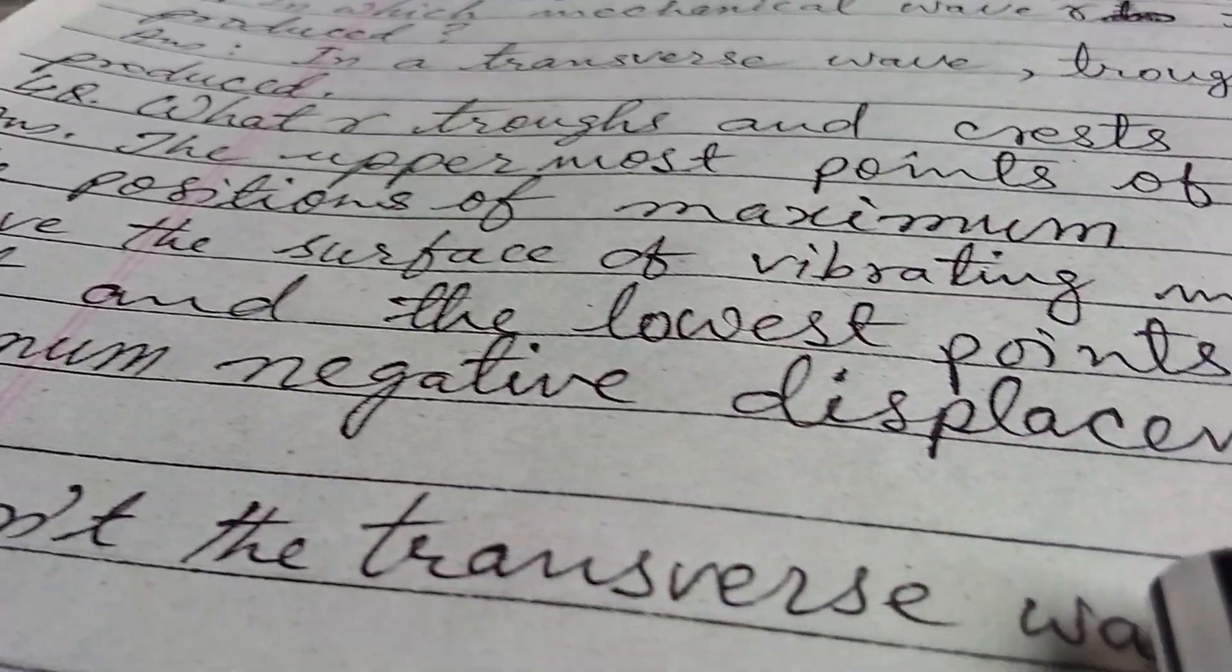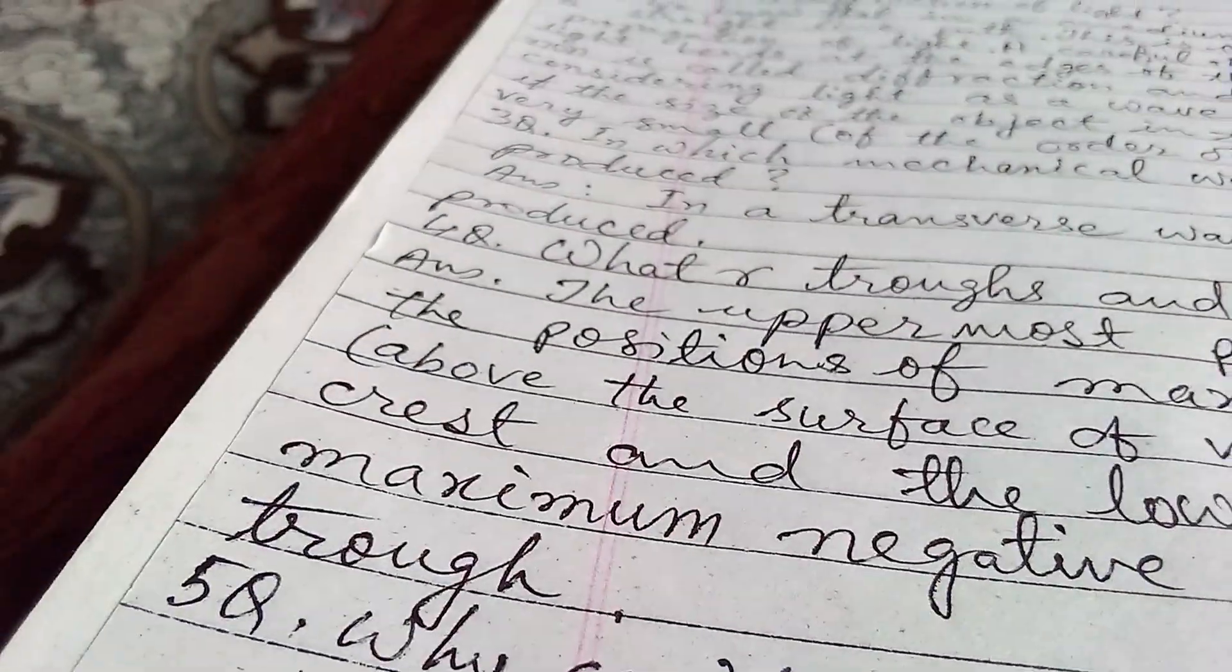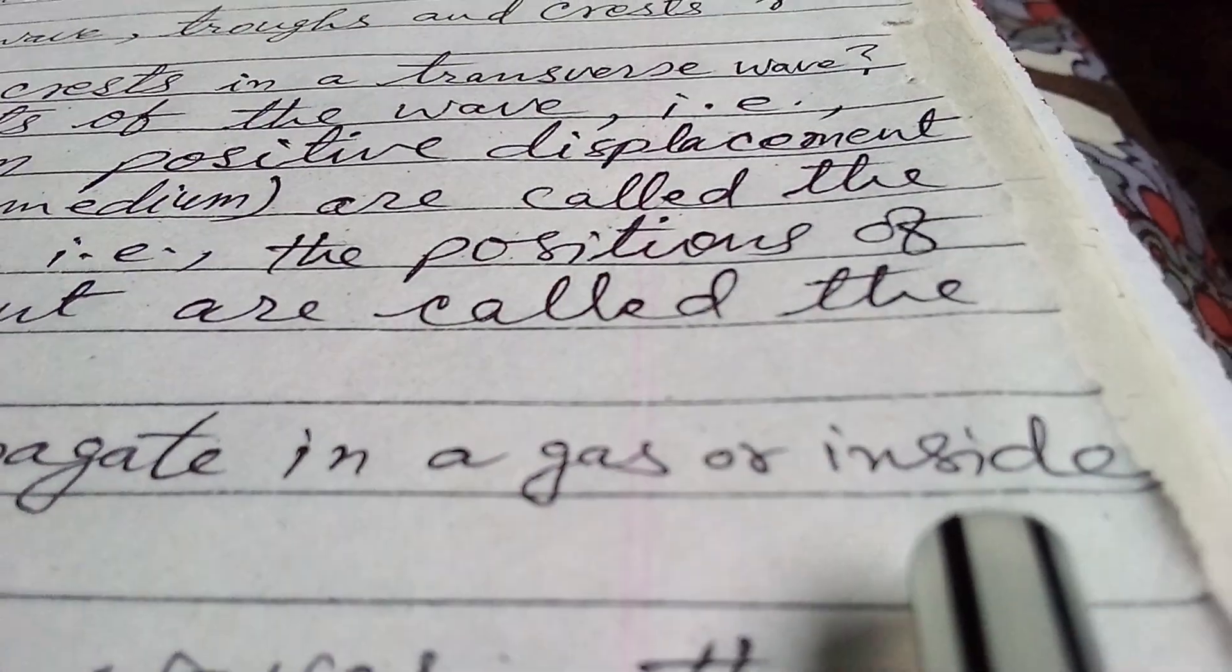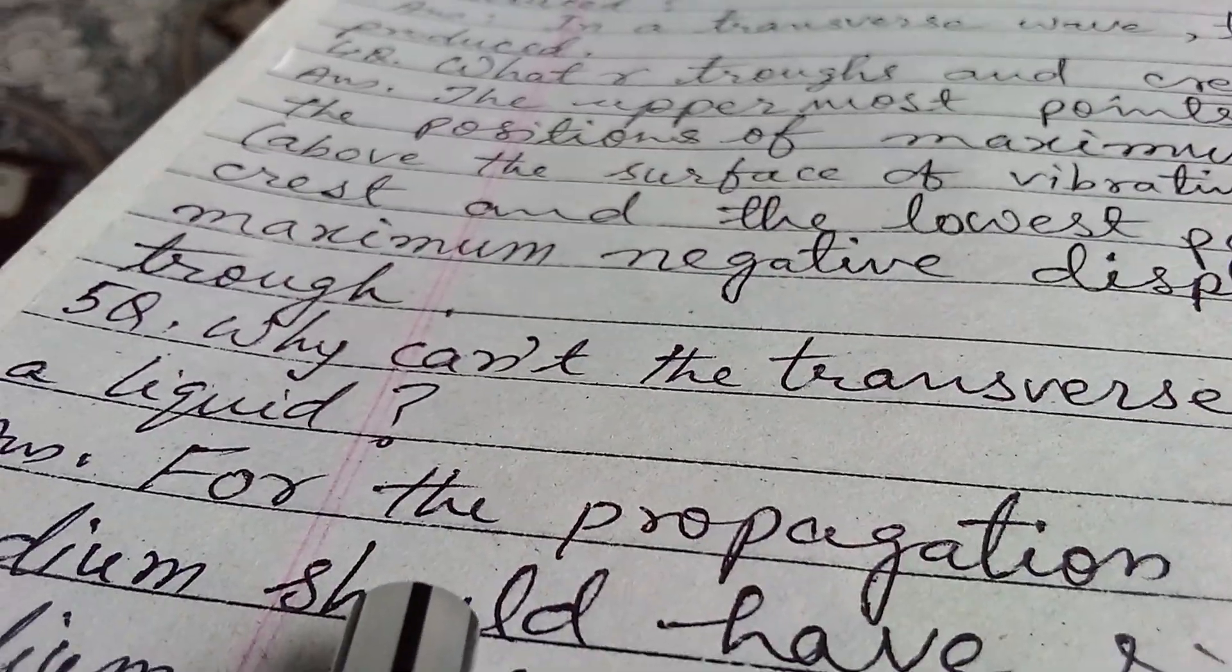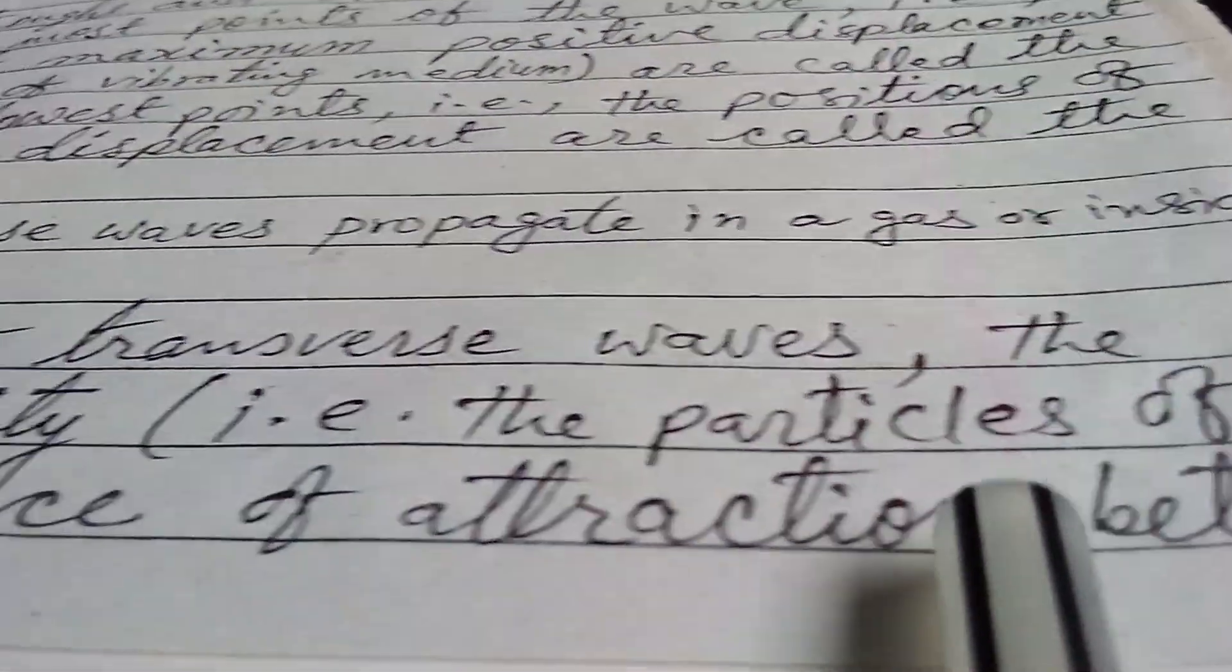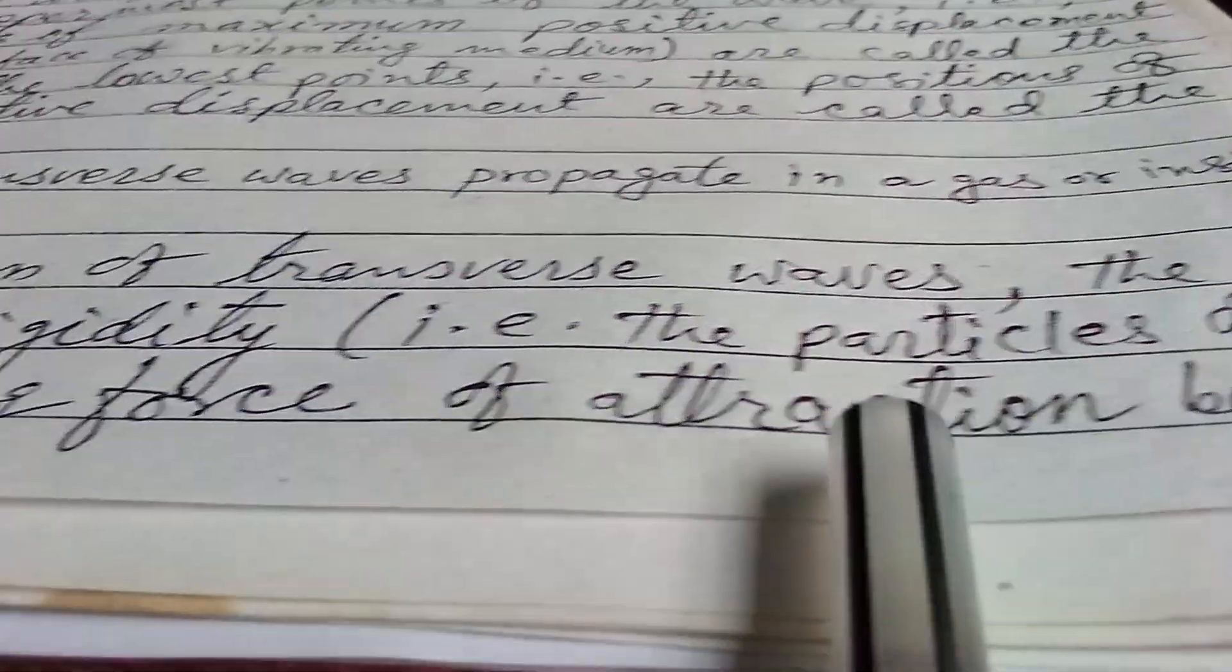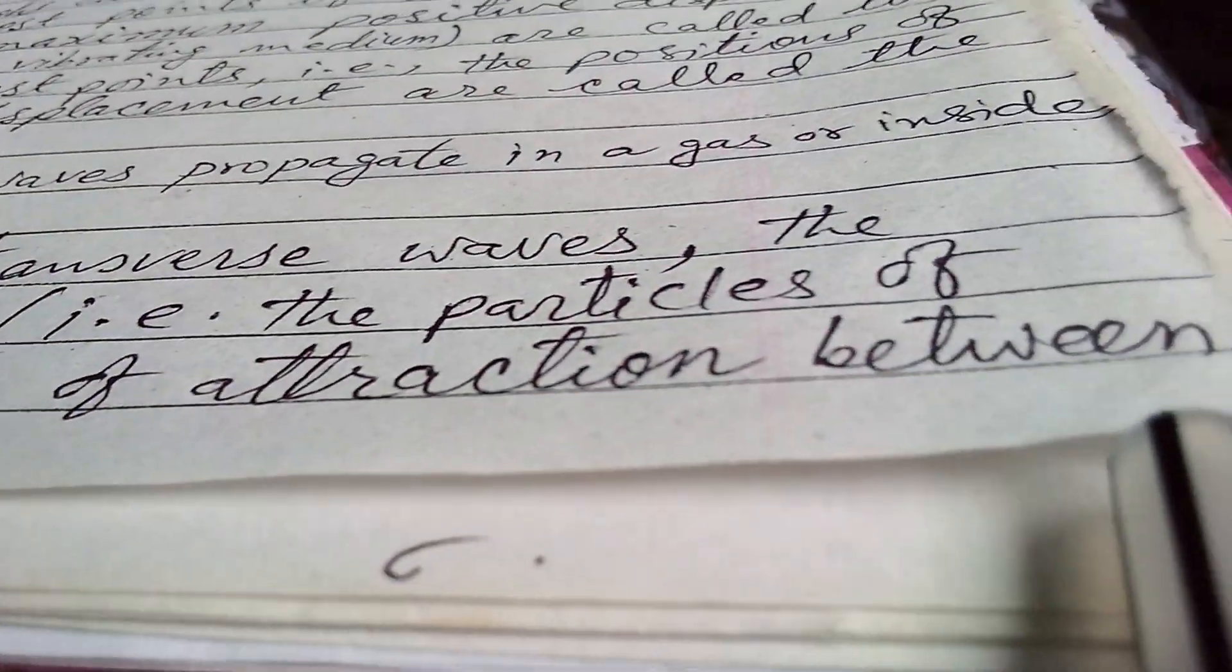Fifth question: why can't transverse waves propagate in a gas or inside a liquid? Answer: for the propagation of transverse waves, the medium should have rigidity, that is, the particles of the medium must have strong forces of attraction between them.